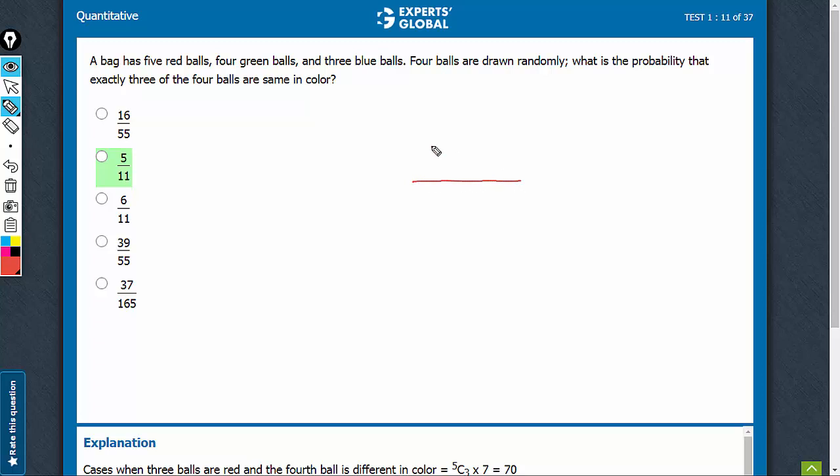4 balls are drawn from a total of 5 plus 4 plus 3, 12 balls. The denominator is going to be 12C4. Now, exactly 3 of the 4 balls drawn have to be of the same color.